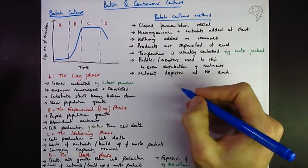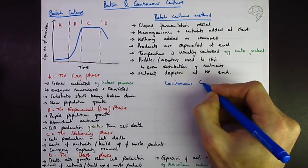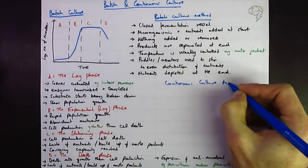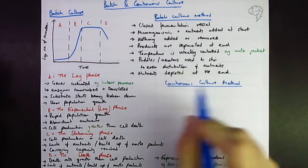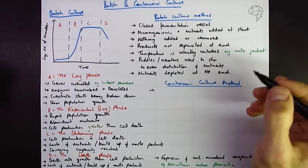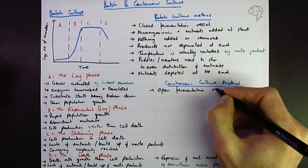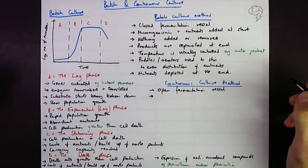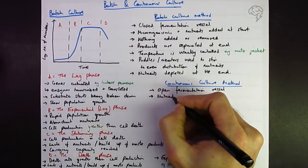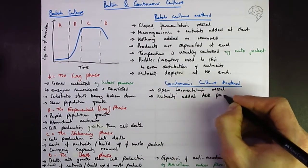Okay, so how's this different to continuous culture method? They don't ask about this one quite so often. So what do you do with continuous culture? Well, it's an open fermenter or fermentation vessel. So nutrients are added and the products are removed at a constant rate, so you're continually adding some nutrients and you're continually removing some products.